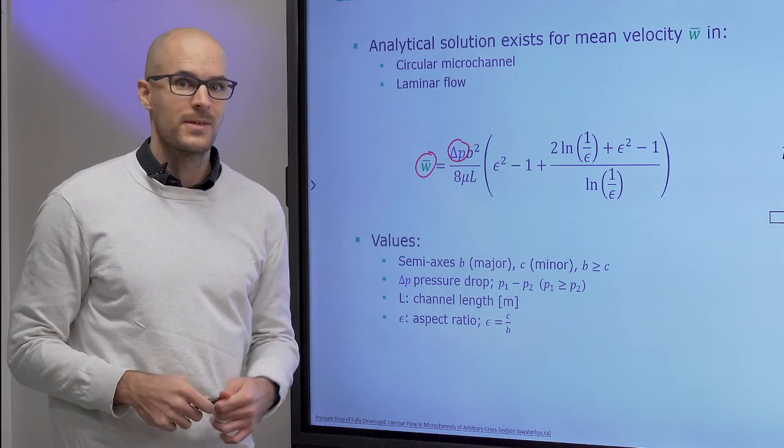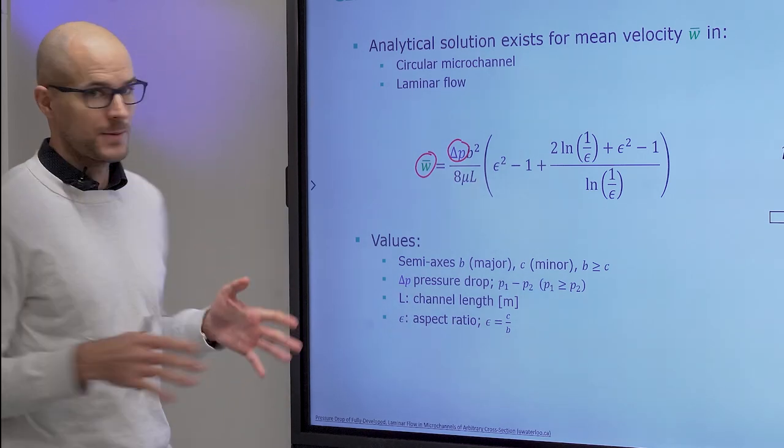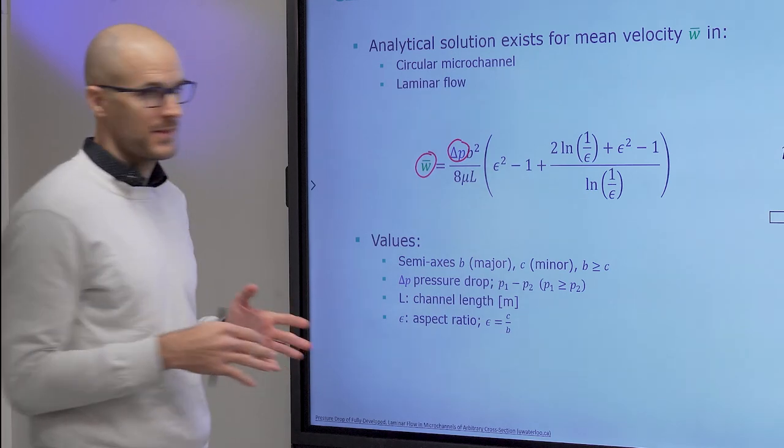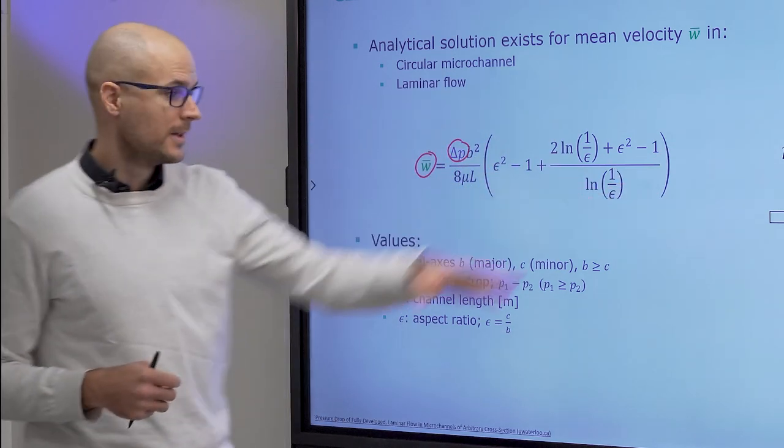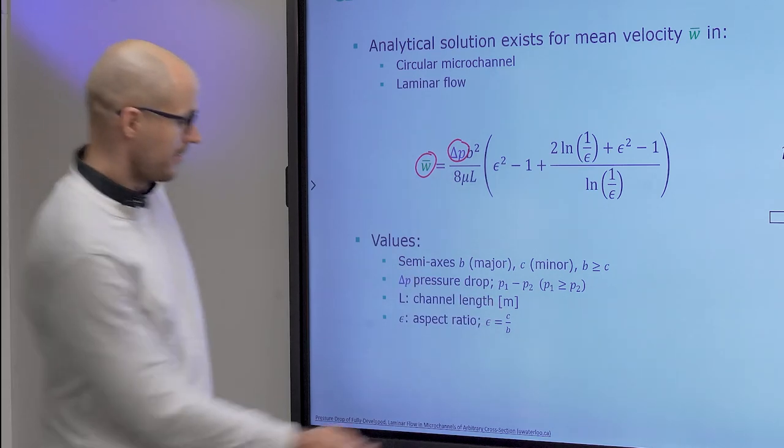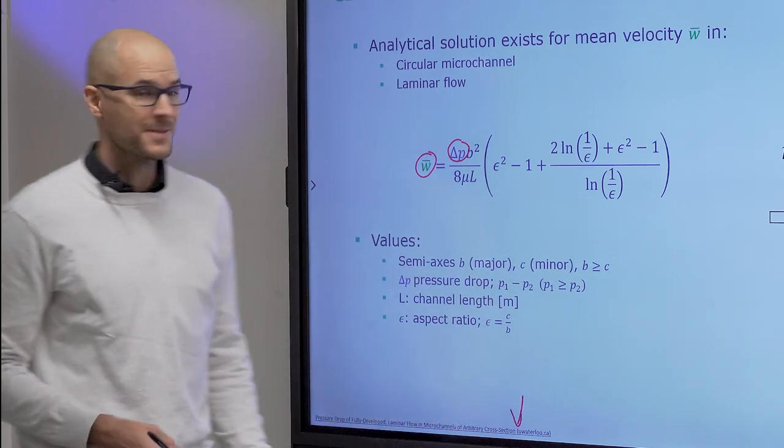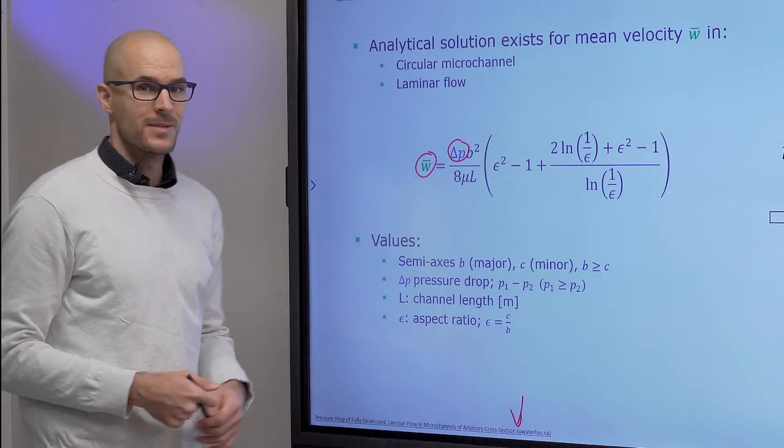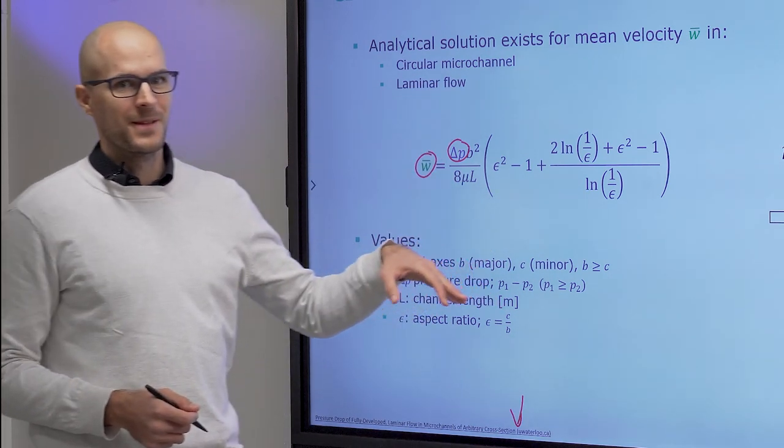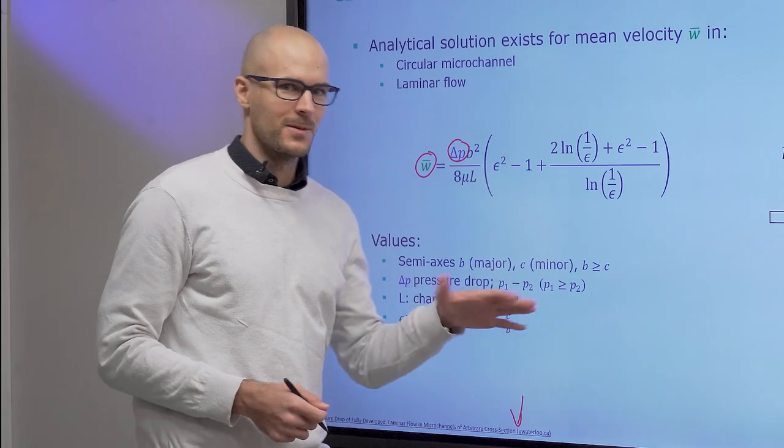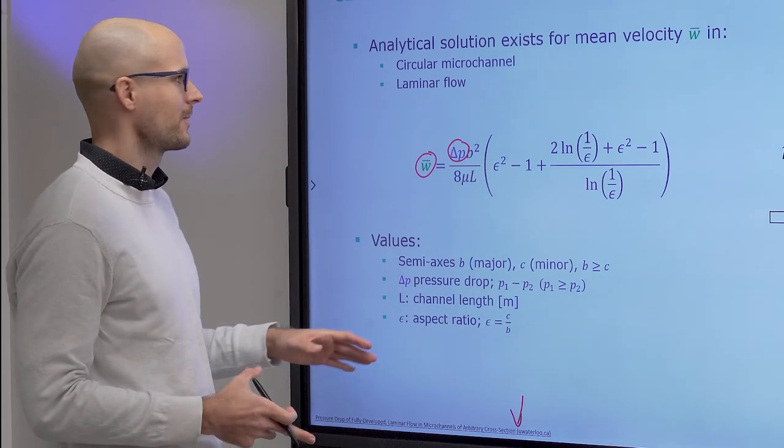And the hypothesis was that an analytical solution exists for the mean velocity, in this case in the circular microchannel. You can find my original source down here, if you would like to gain more information. But this one and the next one is the most important for you. So circular and rectangular microchannels, that's the most important for you.